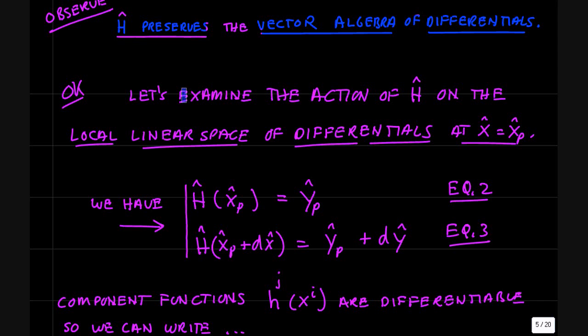Okay, so now that we have this differential structure, let's examine the action of h on the local linear space of differentials at x_p. So we can evaluate h at x_p, and that gives us a point y_p over here. And we can also evaluate h of x_p plus dx, and that's going to give you the original point y plus the differential around y_p.